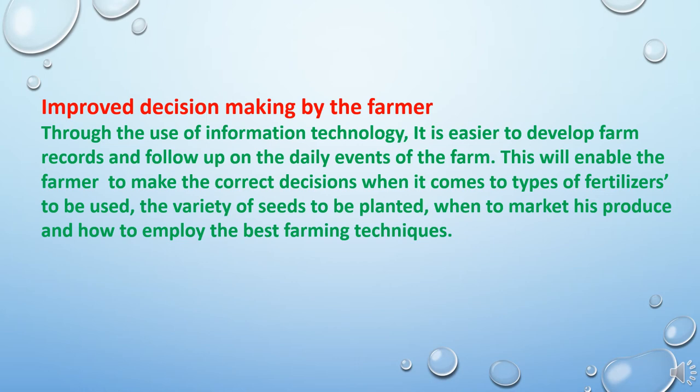The next role of information technology is improved decision making by the farmer. Through the use of information technology, it is easier to develop farm records and follow up on the daily events of the farm. This will enable the farmer to make the correct decisions when it comes to types of fertilizers to be used, the variety of seeds to be planted, what irrigation methods to be followed, when the market produce is ready, and how to employ the best farming techniques.